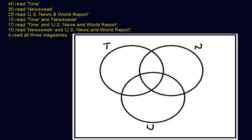Let's start with the most specific: 4 read all three magazines. I know exactly where that goes — right here in the center. This is the region that represents students who read all three magazines.